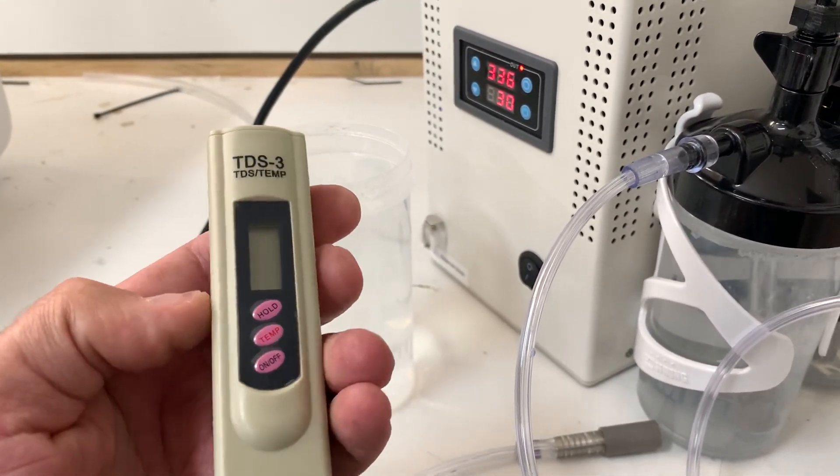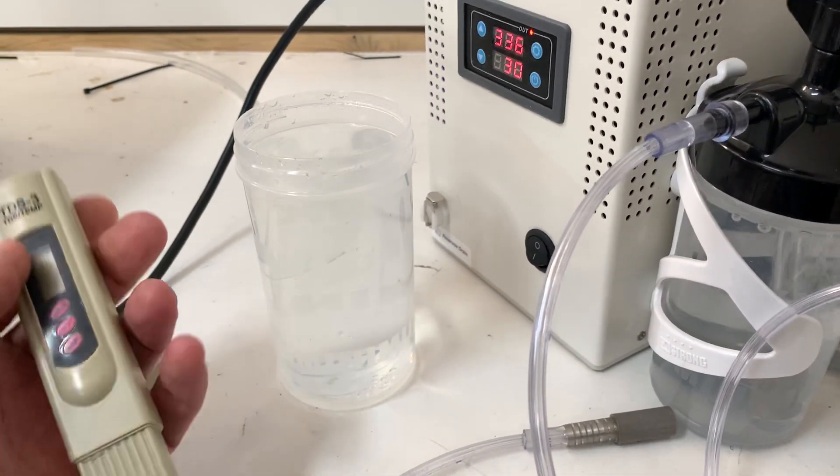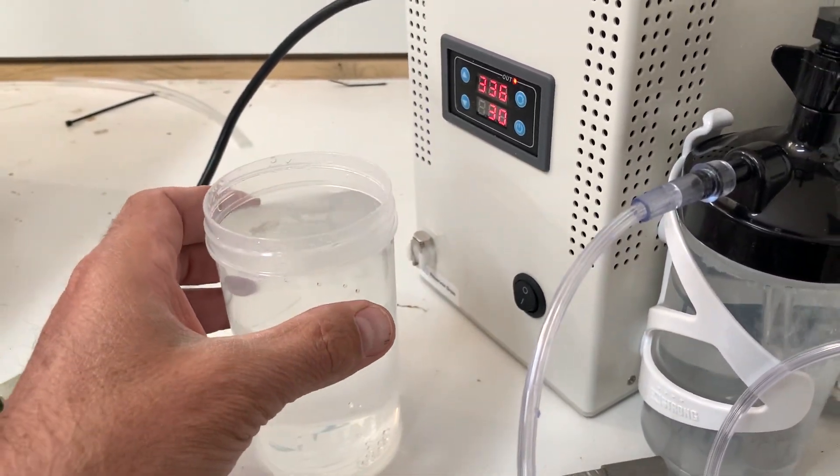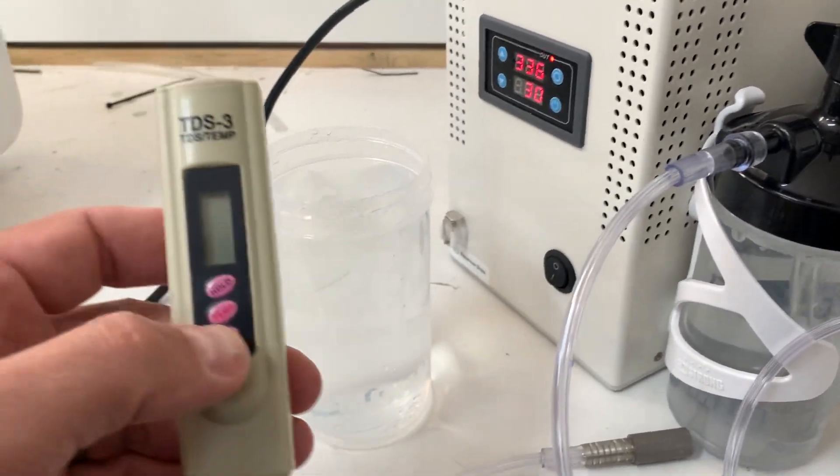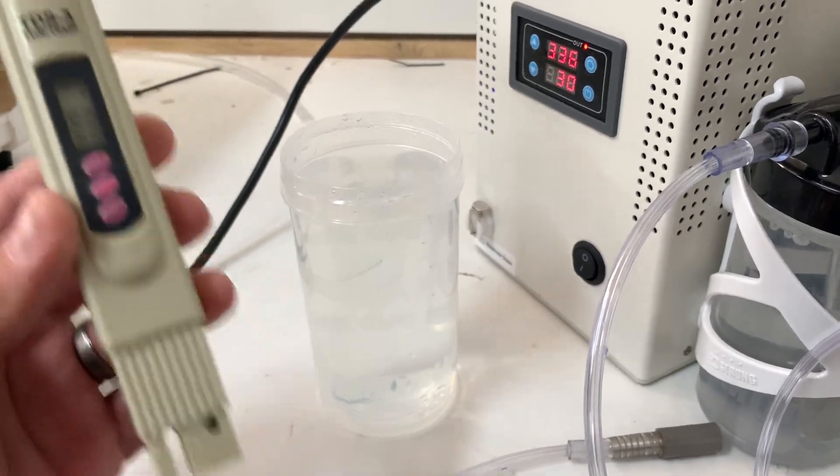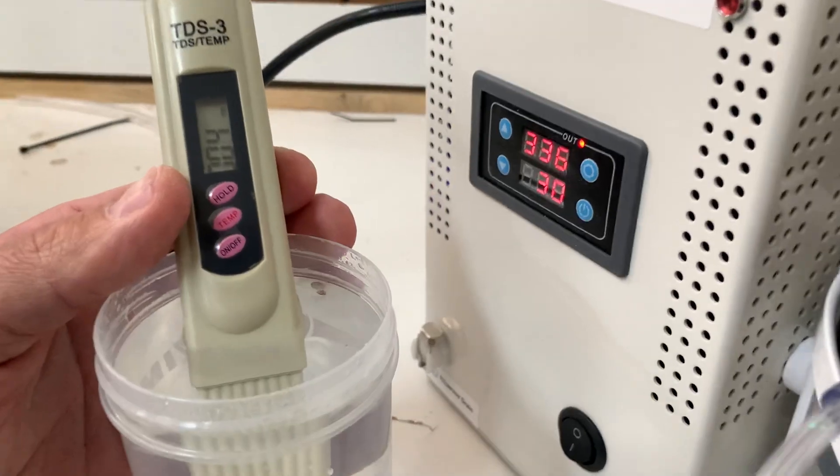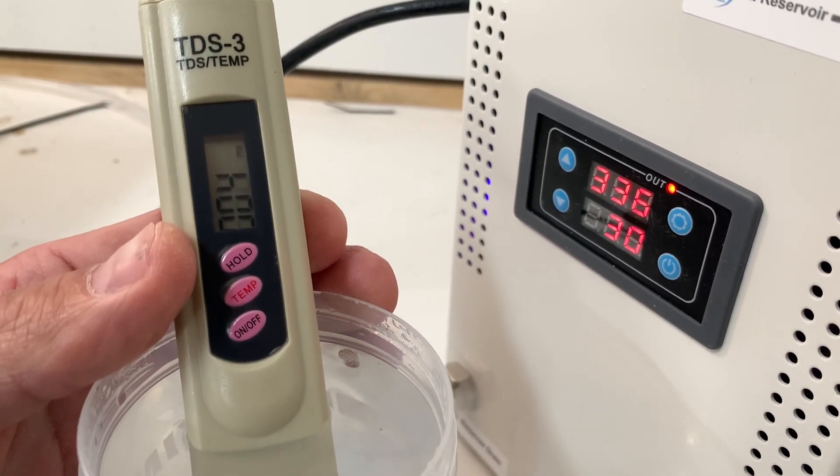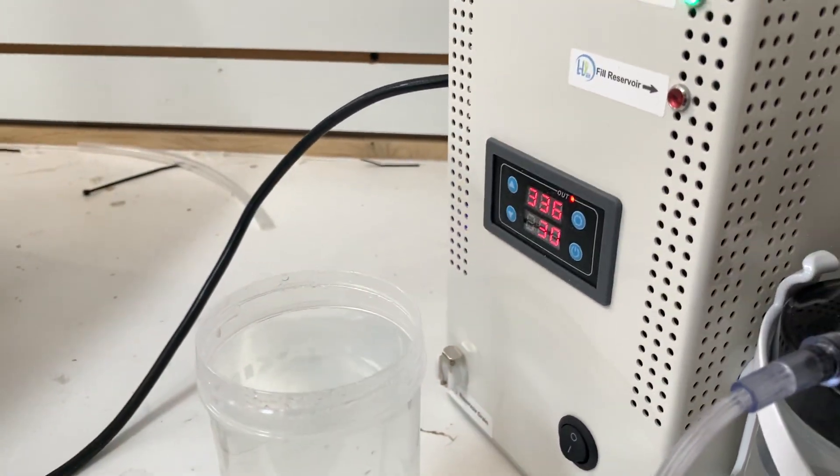So this is going to measure any solids that are in the water. I like to start with a glass of distilled water, and then what we do is you measure the TDS for a baseline. Most distilled water is zero. Let's see what we've got here - we've got four ppm on the meter.